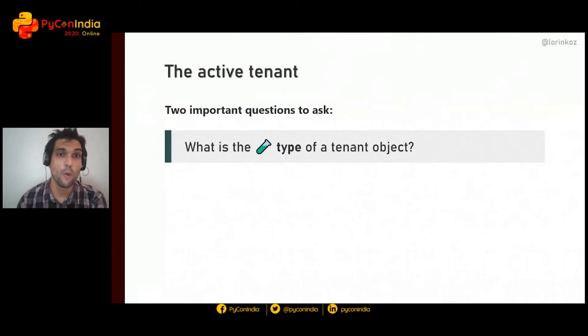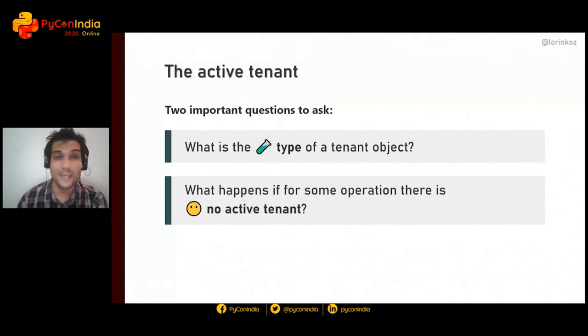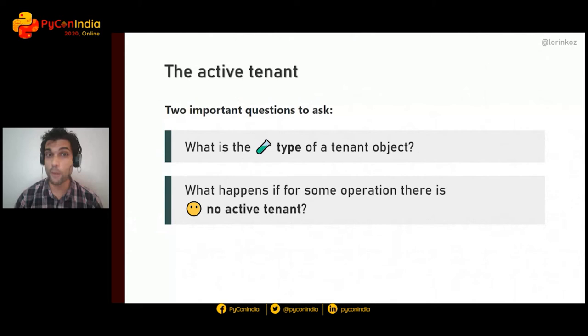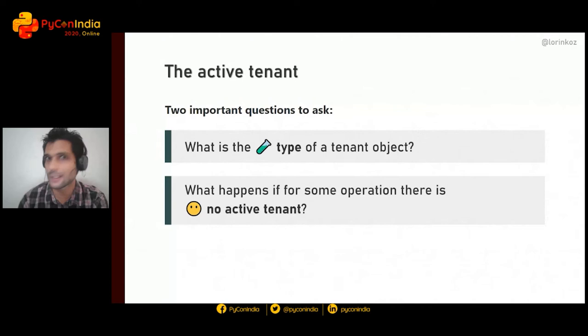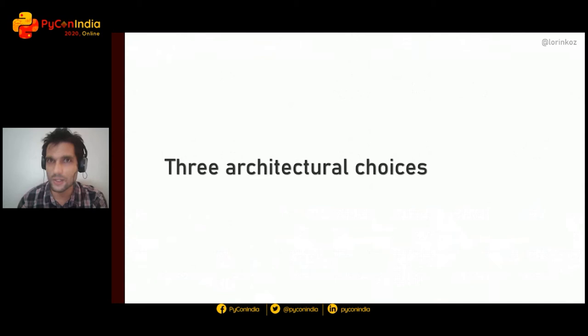About the active tenant, two interesting questions: first, what is the type of a tenant object — is it always going to be an instance of a particular model? Not necessarily. Second, what happens if there is just no active tenant for some operation? Is it a bug, a tenant-agnostic operation, or an indication to run in wildcard mode across multiple tenants? All interesting questions we can discuss later.